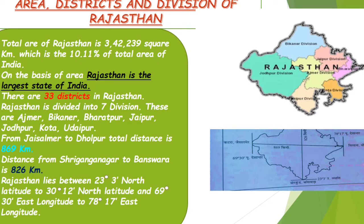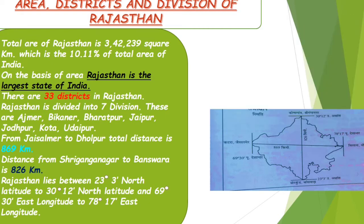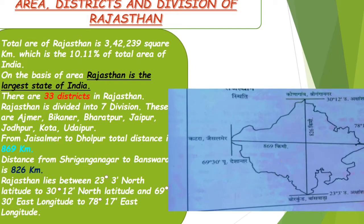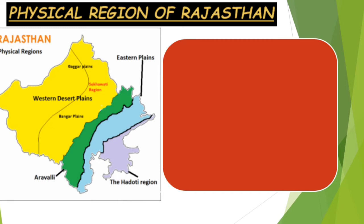Regarding distances, the total distance from Jaisalmer to Dholpur is 869 kilometers, and from Sriganganagar to Banswara the distance is 826 kilometers. In terms of longitude and latitudes, Rajasthan lies between 23°3' North latitude to 30°12' North latitude, and 69°30' East longitude to 78°17' East longitude. Now let's discuss the physical regions of Rajasthan. Rajasthan is mainly divided into four physical regions: Thar Desert, Aravalli Range, Eastern Plain, and Southeastern Plateau.